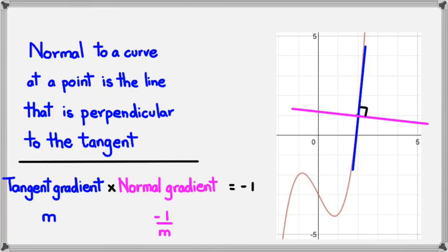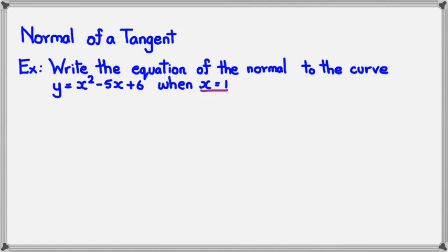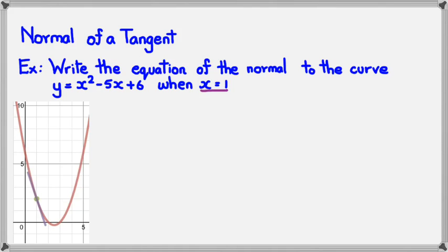Let's have a look at an example. In this example, I want to write the equation of the normal to the curve y = x² - 5x + 6 when x = 1. So it's the exact same question that we worked with before, where we worked out the tangent, except this time we're going to work out the normal. As usual, we're going to have a look at the graph.